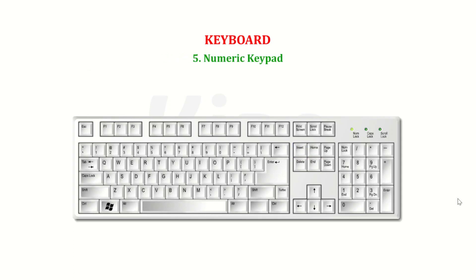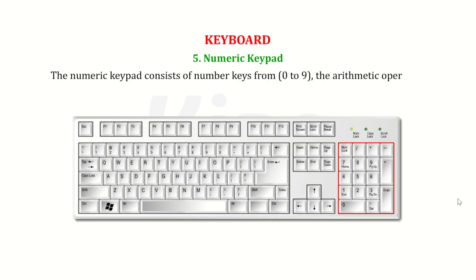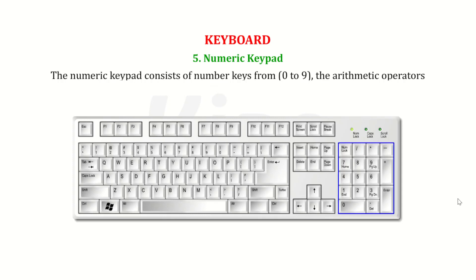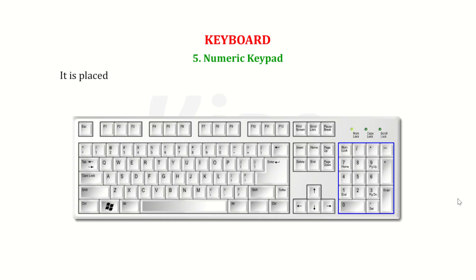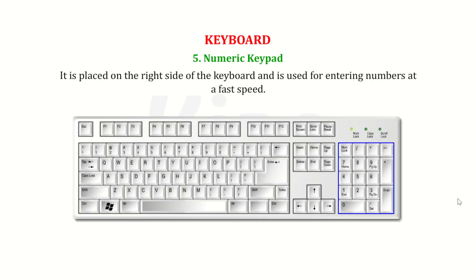Number 5 — Numeric keypad: The numeric keypad consists of number keys from 0 to 9, arithmetic operators, and decimal point, similar to a calculator. It is placed on the right side of the keyboard and is used for entering numbers at a fast speed.